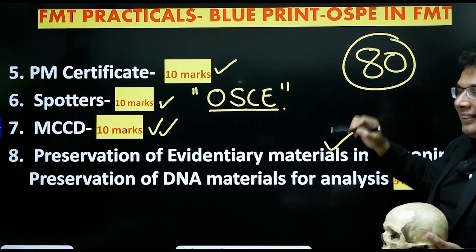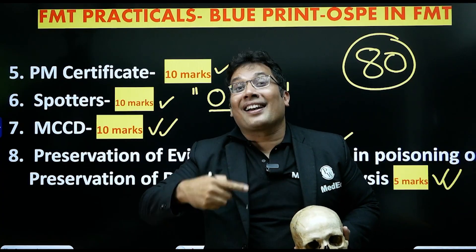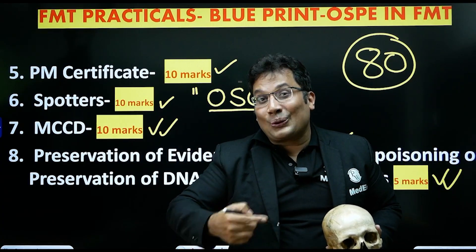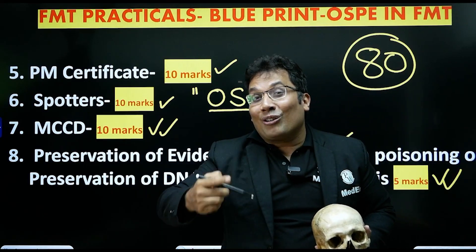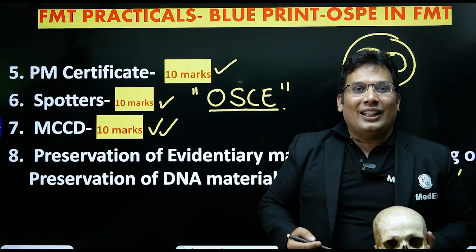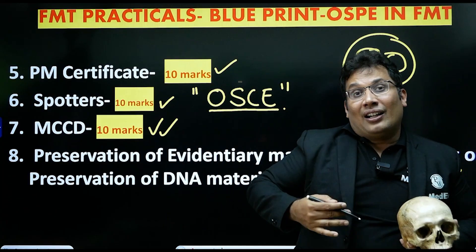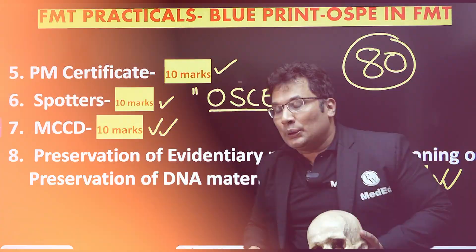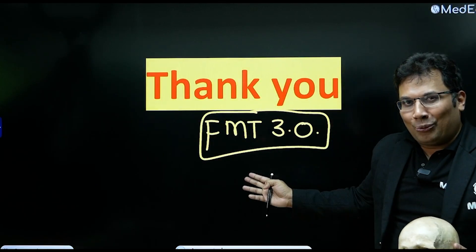The practical is 80 marks, theory is 100, and viva is 20 — totaling 200 marks. You must get 100 out of 200. This is the overview of forensic medicine and toxicology, the weightage, and how to approach forensic medicine in third year. Thank you all — we'll see you in FMT 3.2.